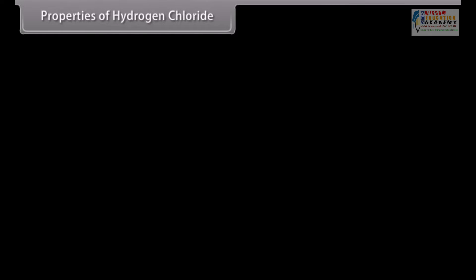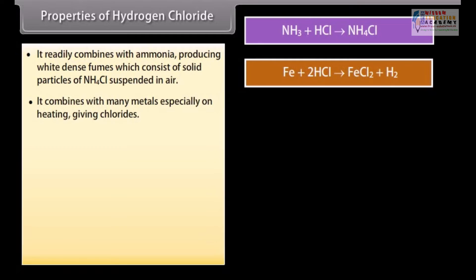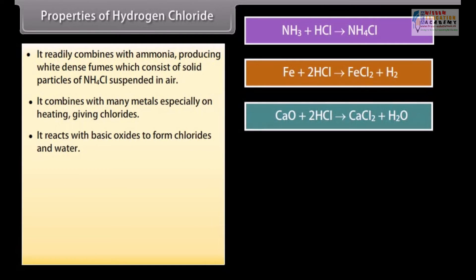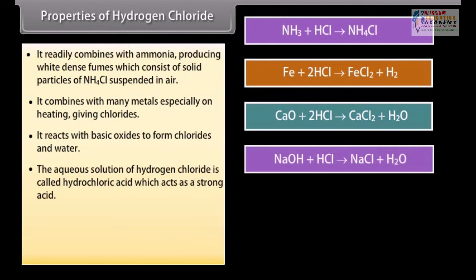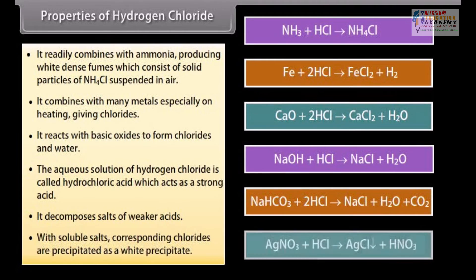Hydrogen chloride readily combines with ammonia, producing white dense fumes consisting of solid NH₄Cl particles suspended in air. It combines with many metals, especially on heating, giving chlorides. It reacts with basic oxides to form chlorides and water. The aqueous solution of hydrogen chloride is called hydrochloric acid, which acts as a strong acid. It decomposes salts of weaker acids; with soluble salts, corresponding chlorides are precipitated as a white precipitate.